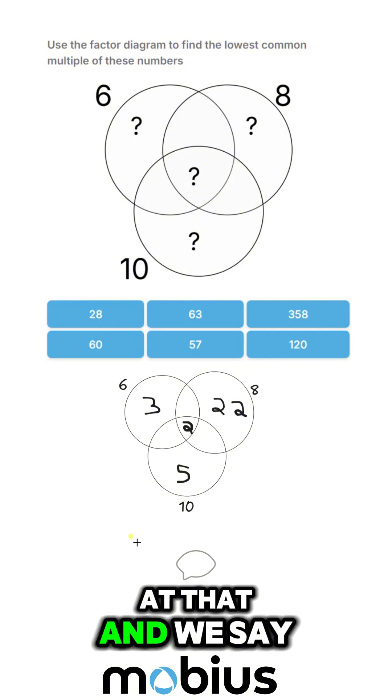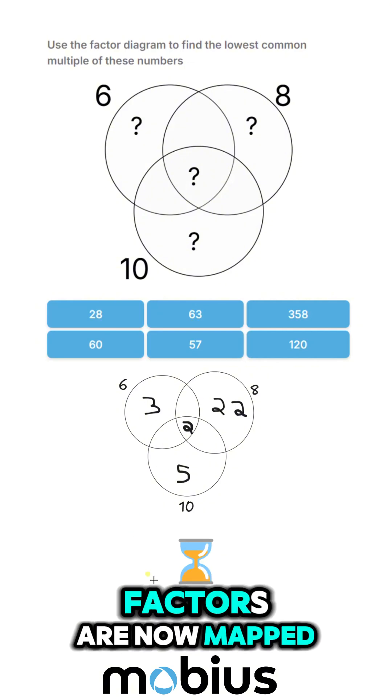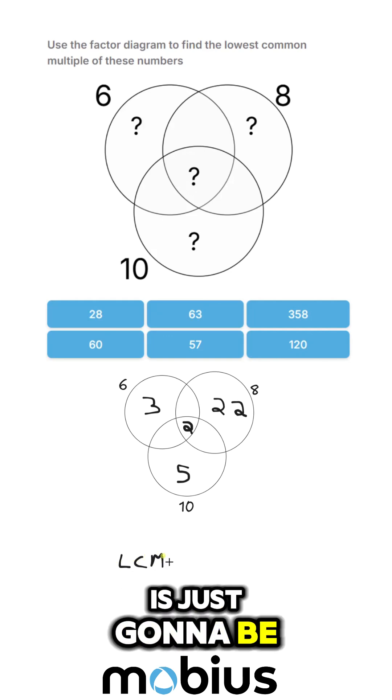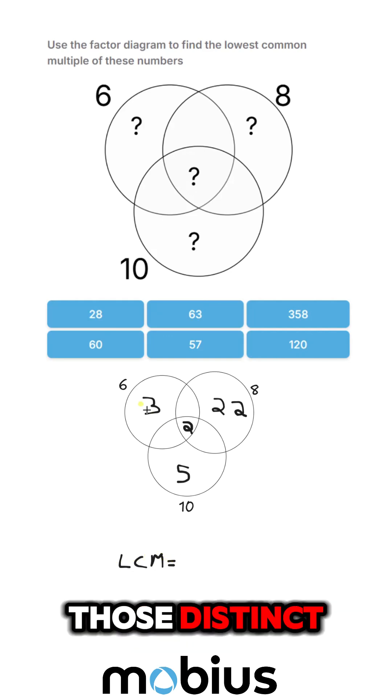So if we look at that and we say all of our distinct factors are now mapped on here, the lowest common multiple is just going to be the product of all of those distinct factors.